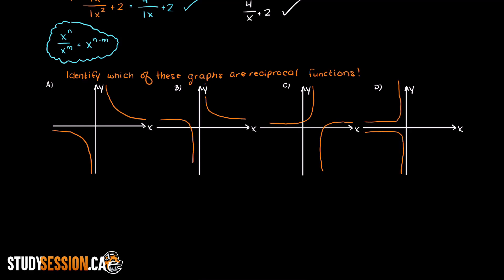Let's begin with example a again. So as you can see here we can clearly draw a horizontal and vertical asymptote and our parabolas are on opposing corners which means that it is indeed a reciprocal function.